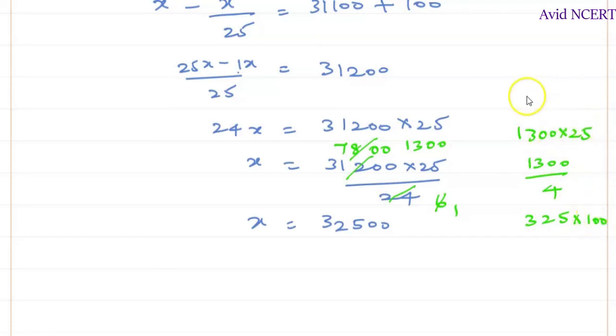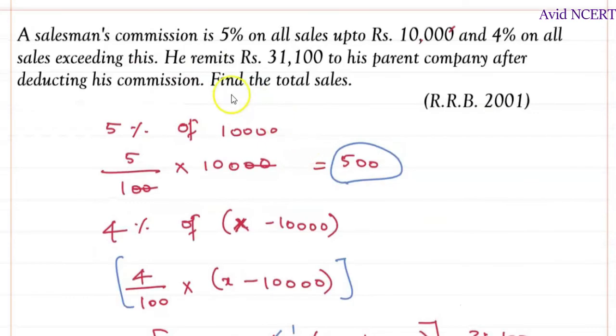So whenever you are multiplying by 25, first divide the number by 4 and multiply by 100. So the answer we get here is 32,500. So the total sales he has done is 32,500.